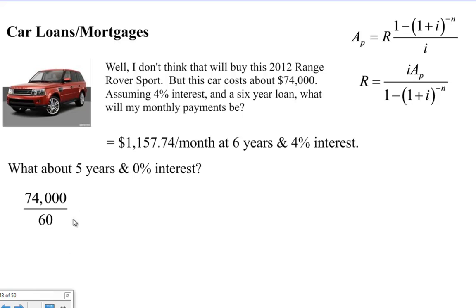If that's the case, we're just going to take the car amount, $74,000, divided by 60 months. That gives us a payment of $1,233.33 per month. Now, it goes up almost 100 bucks per month. Not that big of a deal, but how much do you save over the life of the loan?